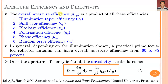If the overall aperture efficiency is known, directivity can be calculated as D = (4π/λ²)·Ae = (4π/λ²)·η_AP·A_P, where η_AP is the aperture efficiency and A_P is the physical area of the paraboloid reflector. The overall aperture efficiency typically lies between 60% and 85%.